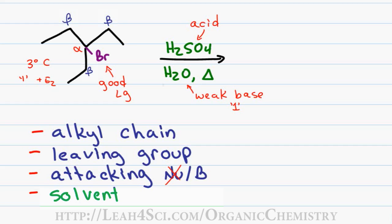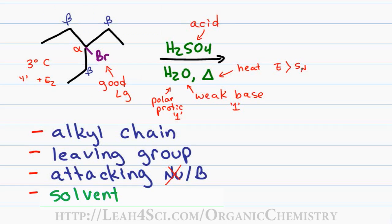H2O as a polar protic solvent can stabilize charges that form in solution, which also favors one-type reactions. You will often see competition between SN1 and E1, so don't automatically assume only one can happen. In this case both SN1 and E1 can occur; however, the presence of heat favors elimination over substitution, so E1 is preferred. Since this is an E1 video, I'll only show the E1 mechanism, but keep in mind substitution products will also form.